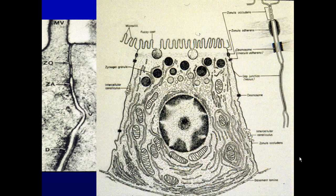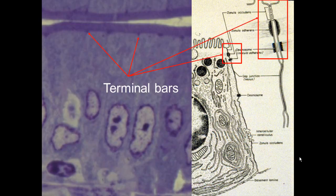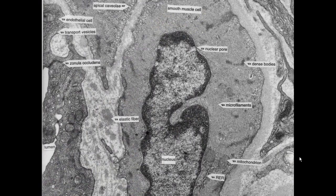Epithelium has junctions: you have zonula occludens, zonula adherens, and macula adherens. These junctions can be seen as terminal bars in epithelial cells at the surface at the light microscopic level. At the EM level we can see the same thing — there is a zonula occludens right here between two endothelial cells, and here is another zonula occludens going in through there.